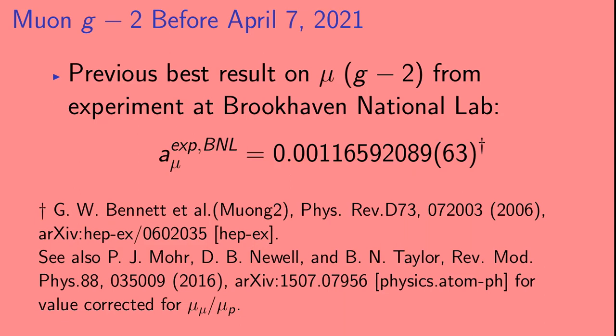Up until April 7th, the best experimental determination of muon g-2 was from the experiment at Brookhaven National Laboratory. That result is shown here. Its uncertainty is shown in parentheses and is on the last two digits of the result.